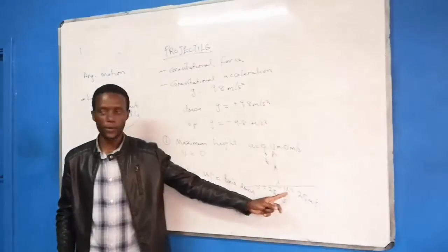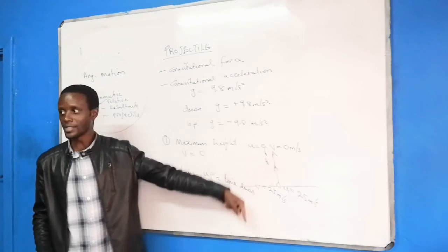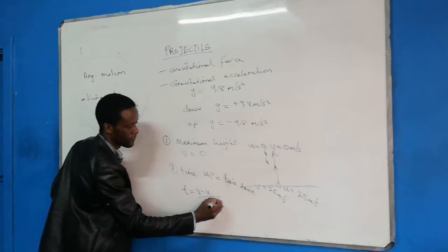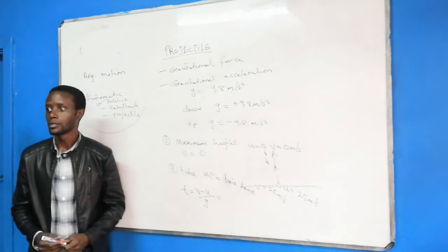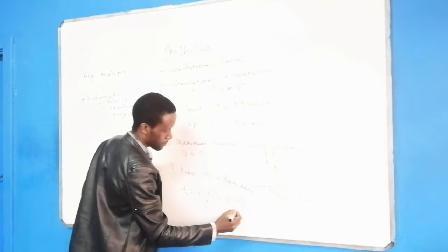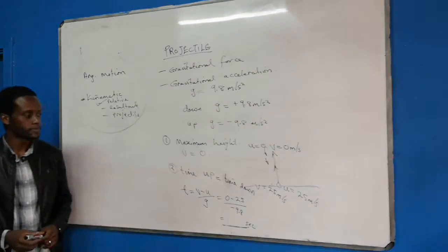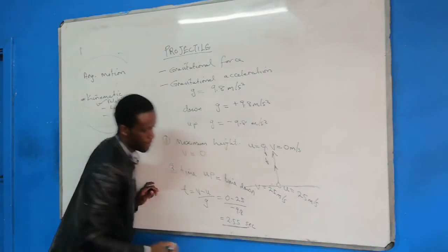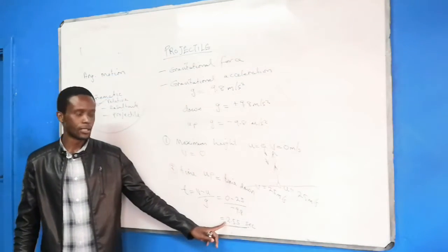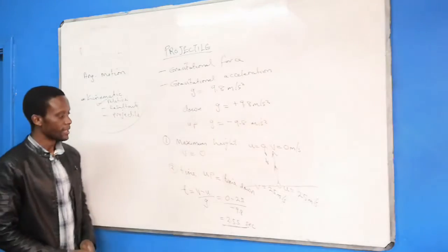You can use one direction for your calculations. If you choose upwards, gravity is negative; if you choose downwards, gravity is positive. The formula is t equals (v minus u) over g. Using the upwards direction, initial velocity is 25 m/s and final velocity is zero. This gives you the time to go up, and that same time applies going down. The total time is 5.2 seconds, with 2.55 seconds going up and 2.55 seconds going down.